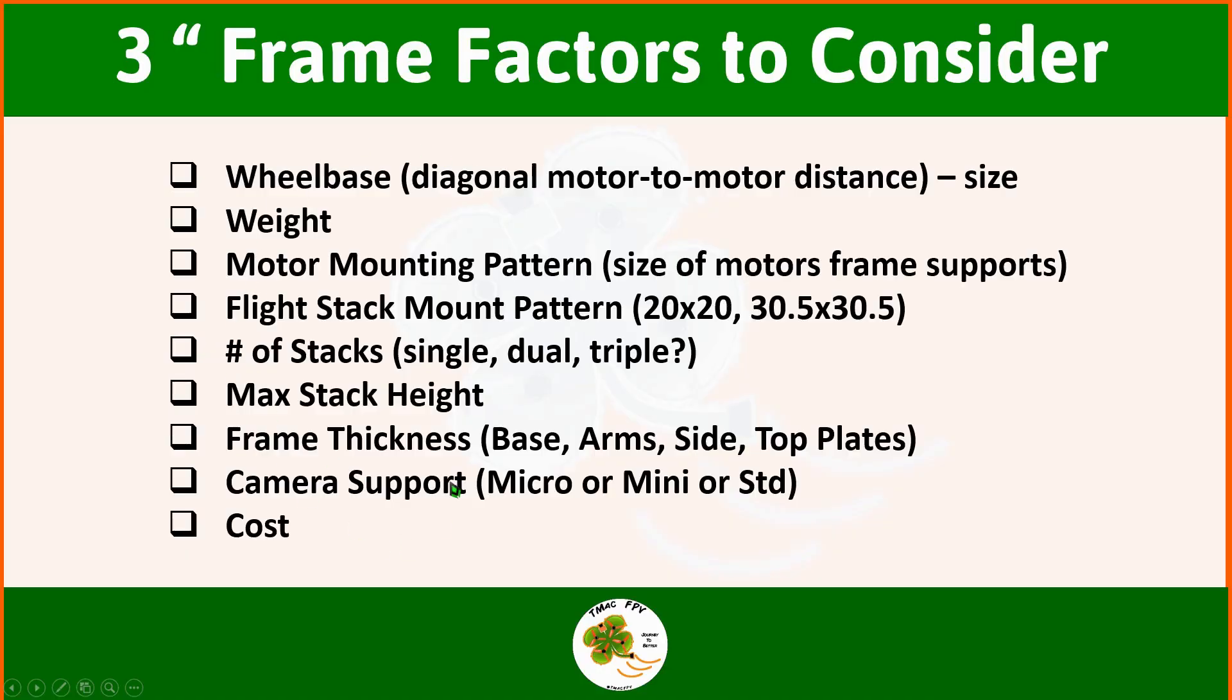And these are the parameters that we're going to be taking a look at when we're walking through the process with our two frames. The first one being the wheelbase or the diagonal motor-to-motor distance which is the actual size of the frame. The second one is weight. The weight of the frame is going to be a big factor in determining the quadcopter's thrust to weight ratio because the weight of the frame is actually one of the biggest contributors to the overall weight of the quad. The motor mounting pattern, what size motors can the frame support, is the mounting pattern 9x9 or 12x12 basically for these micro 3-inch frames.